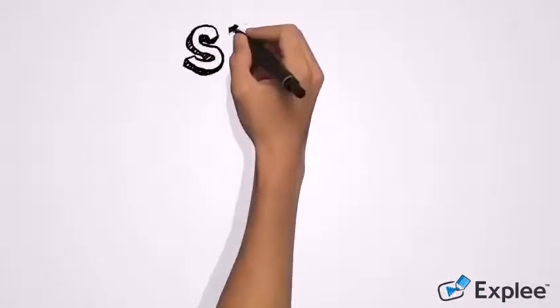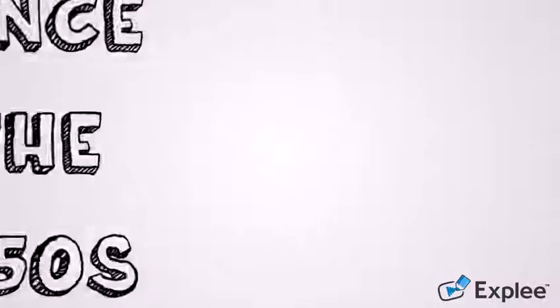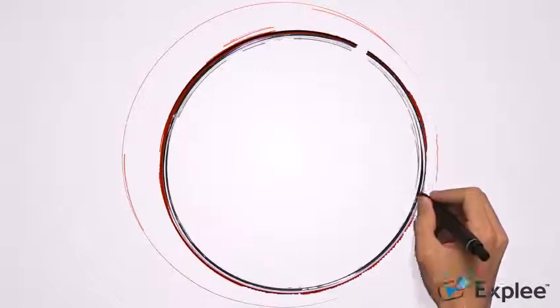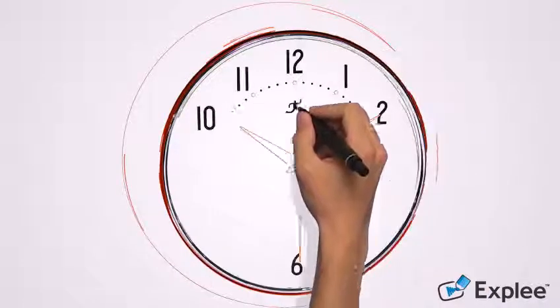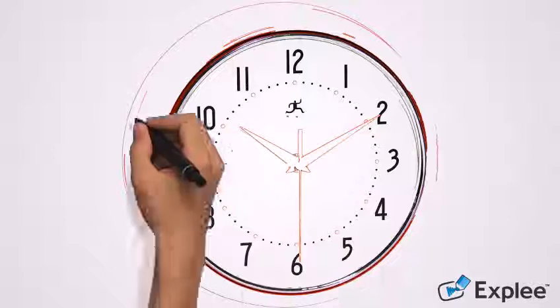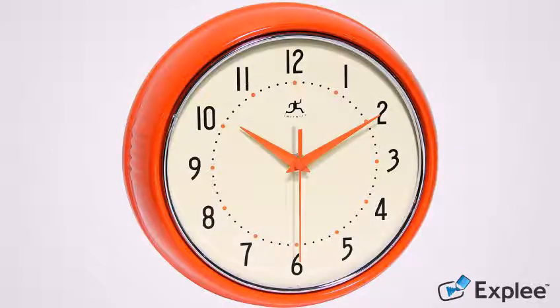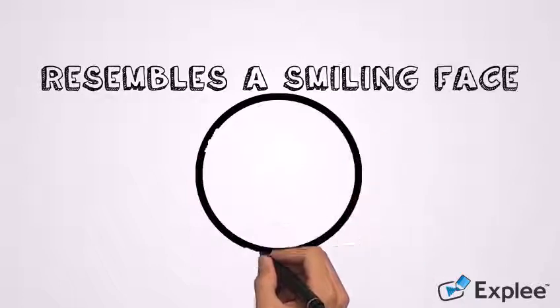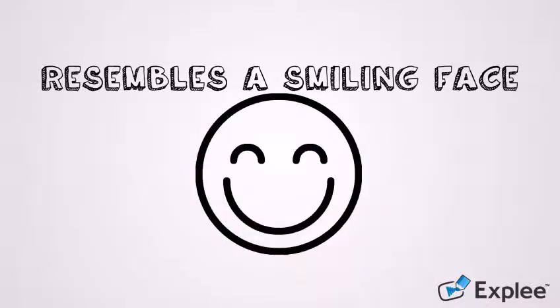However, since the 1950s, the default time setting has changed. Watches have commonly been set at 10 past 10 instead of 20 past 8, assuming that this new setting will positively affect customers because it resembles a smiling face while still preserving the same aesthetics as 20 past 8.